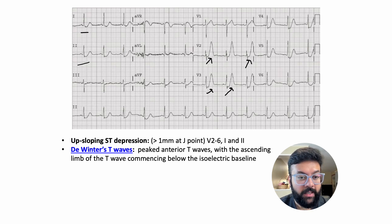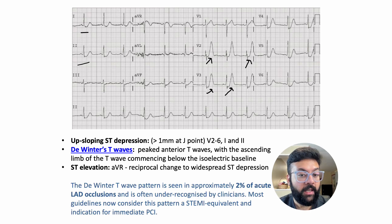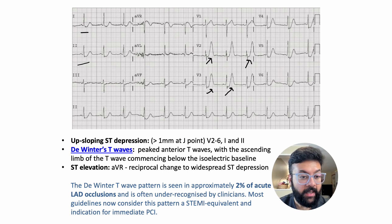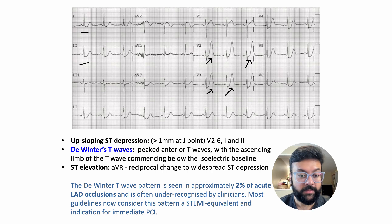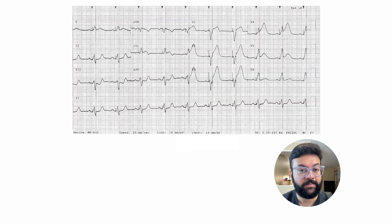If you see upsloping ST depression and tall T waves in the anterior chest leads, this is a STEMI equivalent. In approximately two percent of cases this may indicate complete LAD occlusion, so this is a STEMI equivalent you should never afford to miss.